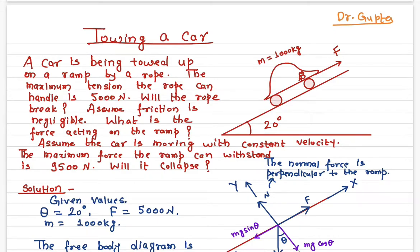Assuming the friction force is negligible, we need to know now how much force is acting onto this ramp. The maximum force the ramp can withstand is 9500 Newton. So when I'm moving this car upwards, will the ramp collapse or will it survive? Let's do the calculation.